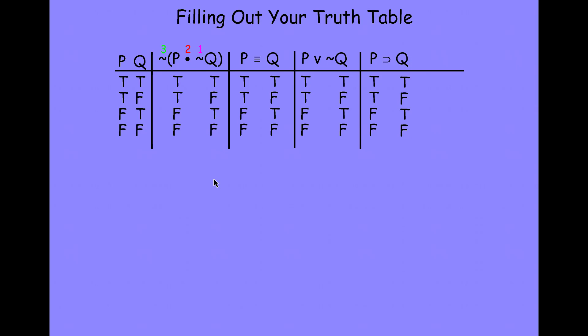Our rule for the tilde is that the tilde has the opposite truth value of whatever it negates. In this case, our tilde negates Q. So we look under Q and follow our rule: when Q is true, tilde Q will be false; when Q is false, tilde Q is then true. That gives us the truth value for tilde Q every different way the world could be.